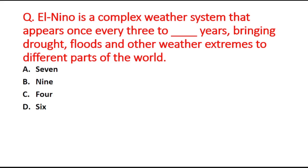Next question: El Niño is a complex weather system that appears once every 3 to blank years, bringing drought, floods and other weather extremes to different parts of the world. Option A is 7, B is 9, C is 4 years, and D is 6 years. The right answer is option A — El Niño is a weather system that appears once every 3 to 7 years.